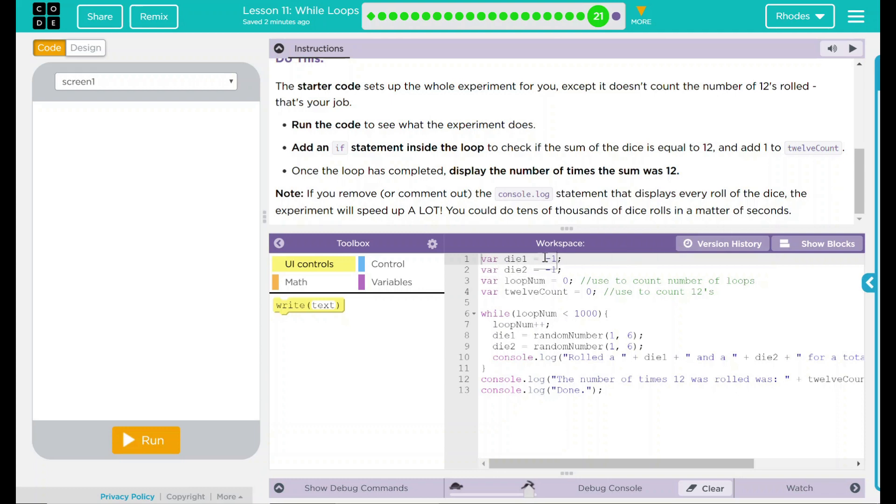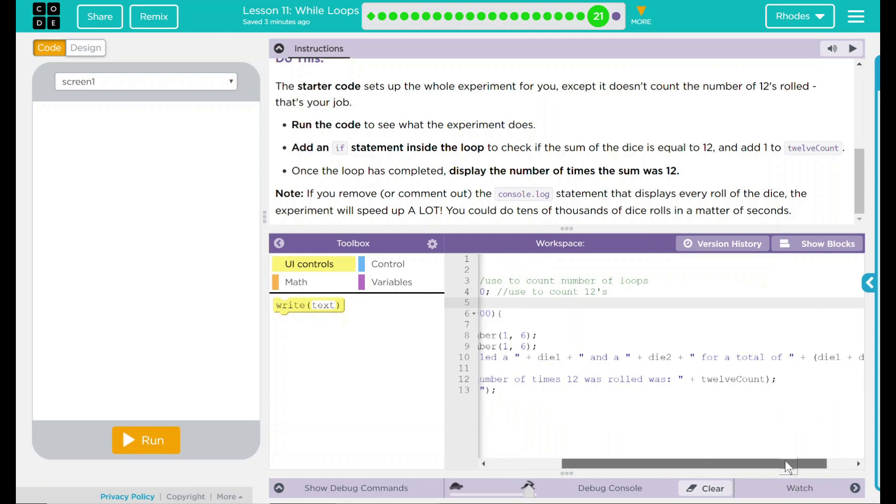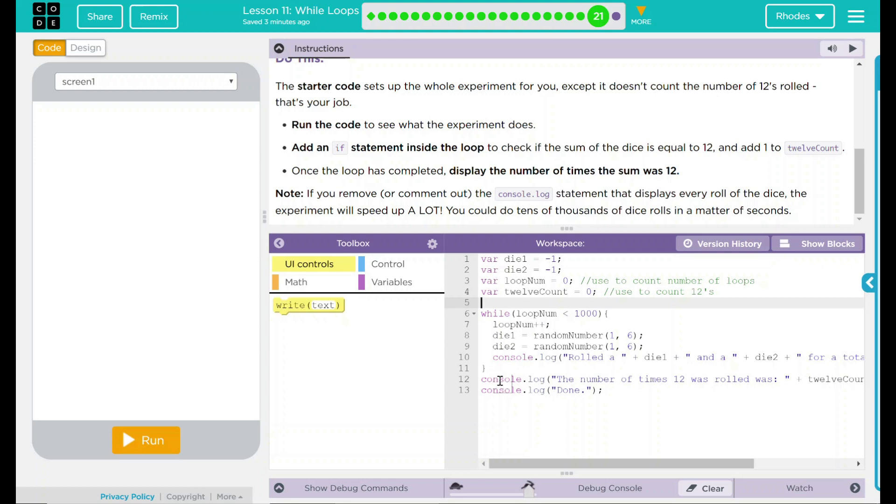Right now, I have a variable die one and two set to negative one. Why is that? Well, so it can get inside the loop. We have a variable loop num, which is set to zero, and a variable 12 count, which is also set to zero. While the loop number is less than 1,000, you're going to add to loop num. Remember, plus plus is just loop plus one. Die one and two are both going to be random between one and six, and then we get something spit out over there. We have a console.log statement that displays rolled a die one plus die two for a total of a sum. And then we have, when it's done, two console.log statements that we'll display.